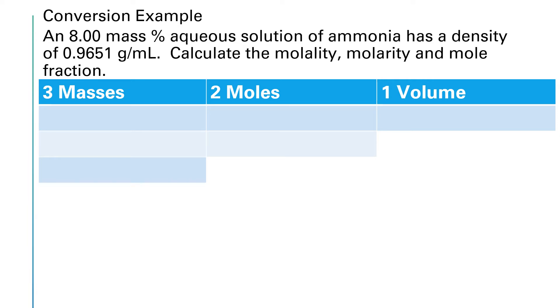The data that we're given to work with is that we have an 8 mass percent solution. Because we're given mass percent, the denominator of mass percent is the mass of the entire solution, and it's a percent. So let's assume that we are working with 100 grams of solution. So I can go ahead and fill out the bottom row of masses in this table. We have 100 grams of the solution.